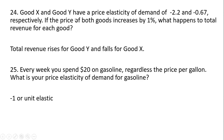Question 24: Good X and Good Y have a price elasticity of demand of −2.2 and −0.67 respectively. If the price of both goods increases by 1%, what happens to total revenue for each? Total revenue rises for Good Y and falls for Good X — it falls for the elastic good and rises for the inelastic good.